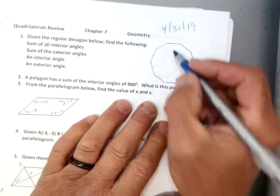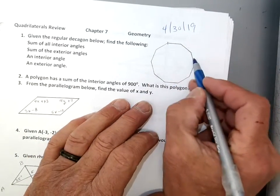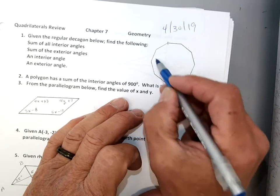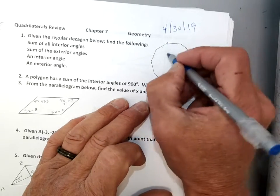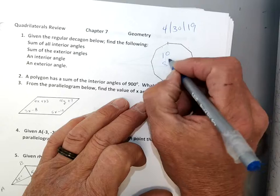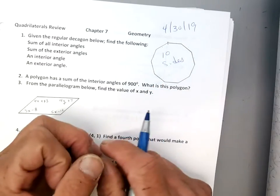So, first of all, let's see how many sides it's got. So you'll see 1, 2, 3, 4, 5, 6, 7, 8, 9, 10. It's got 10 sides, right? 10 sides, which makes it a decagon.